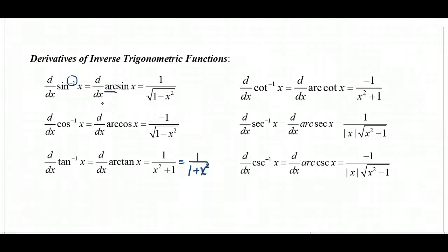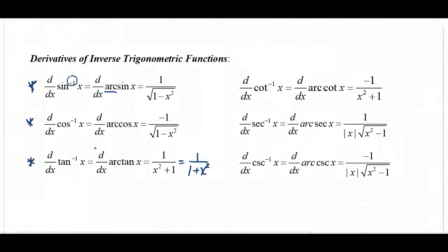Even though there are six trig functions and therefore six inverse trig functions with six derivatives, these three on the left are the ones to commit to memory. The derivative of cotangent inverse, or arc cotangent, is negative one over x squared plus one — just the negative of the arctangent derivative.